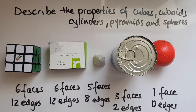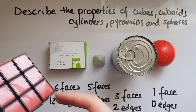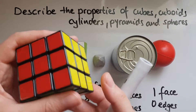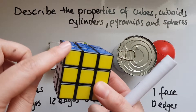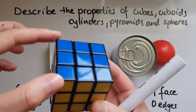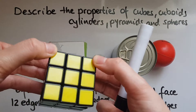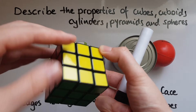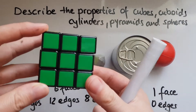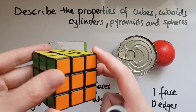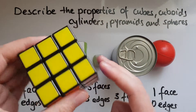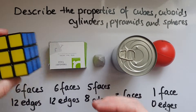Another thing you might come across is the corners or the vertices. Corners — there is a corner formed there. Counting: one, two, three, four, five, six, seven, eight. There are eight corners in a cube.